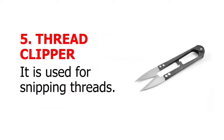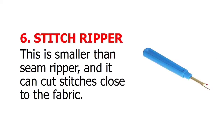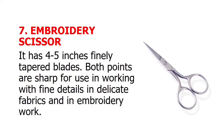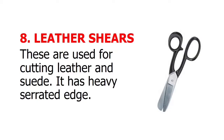Thread clipper: it is used for snipping threads. Stitch ripper: this is smaller than the seam ripper and can cut stitches close to the fabric. Embroidery scissor: it has 4 to 5 inches finely tapered blades; both points are sharp for use in working with fine details in delicate fabrics and in embroidery work. Leather shears: these are used for cutting leather and suede; they have a heavy serrated edge.